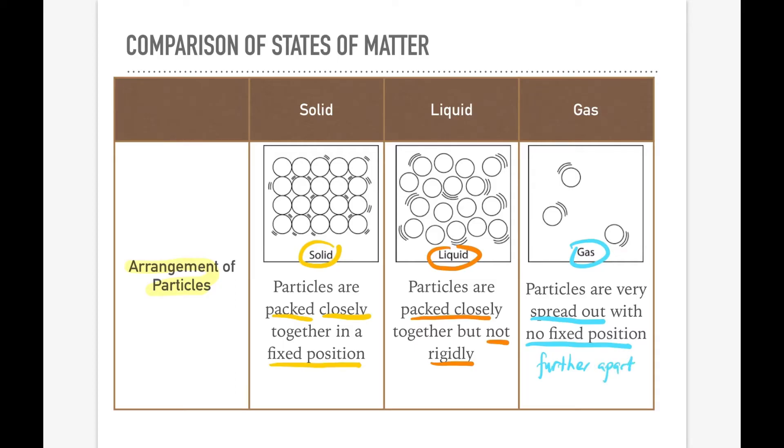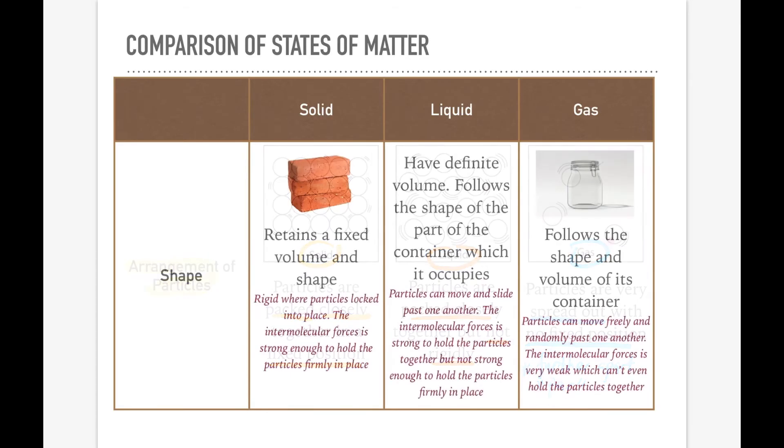Now let's look at the shape of the states of matter. For solid, it retains a fixed volume and shape, meaning its shape is fixed and its volume is also fixed. Because as we said earlier, it's rigid, so the particles' positions are already fixed. The bonds between the particles, the intermolecular forces, are very strong, causing them to always remain in a close and fixed state, unable to move around.